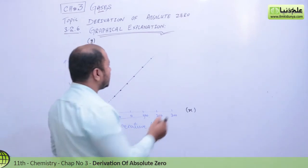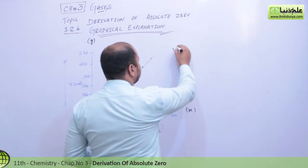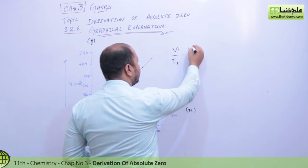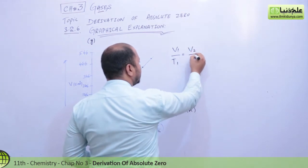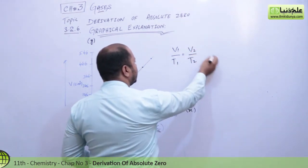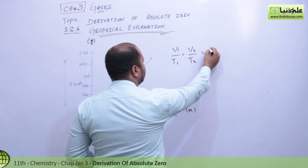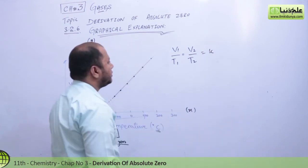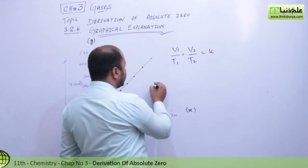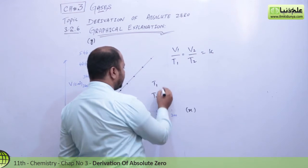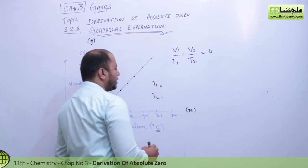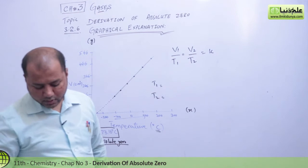So we have Charles Law: V1 over T1 equals V2 over T2, and these are equal to a constant value k. Let's say we have temperature T1 and temperature T2.